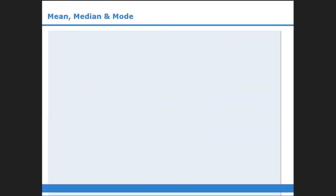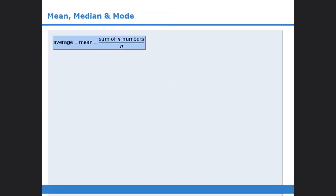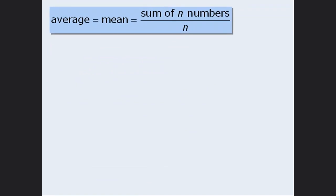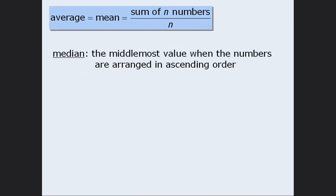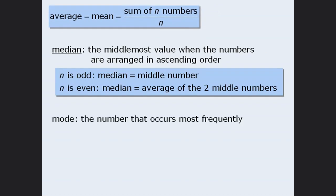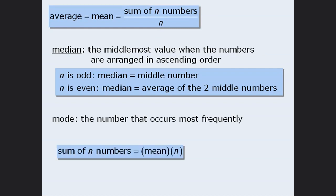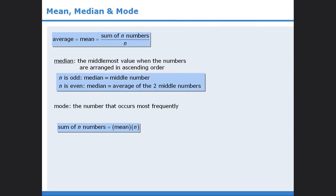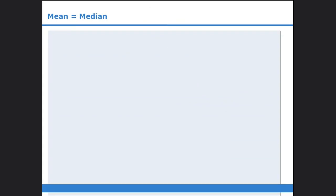Let's summarize. In this lesson, we learned how to find the average of a set of numbers, we learned the definition of median and how to calculate the median under two conditions, we learned the definition of mode, and finally we learned a formula for finding the sum of numbers in a set.